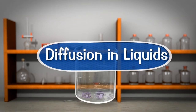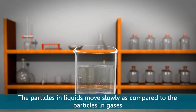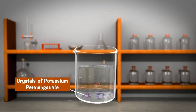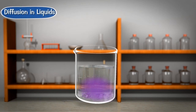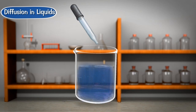Diffusion in liquids is slower than that in gases because the particles in liquids move slowly compared to particles in gases. If a crystal of potassium permanganate is placed at the bottom of water in a beaker, the purple color spreads into the whole water slowly, due to the diffusion of potassium permanganate particles into water. Similarly, if we pour a drop of ink into a beaker of water, the color of ink spreads into the whole water due to the diffusion of ink particles into water.